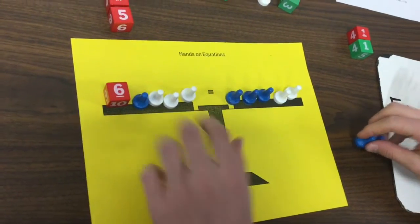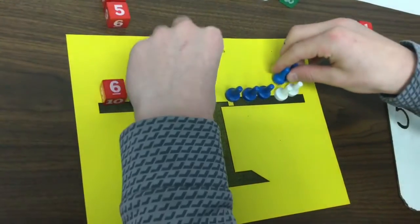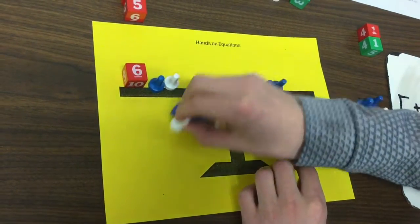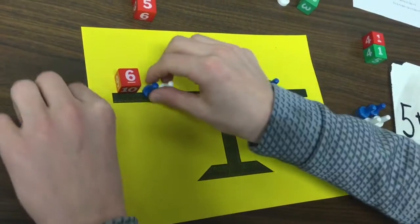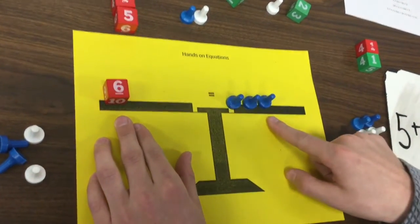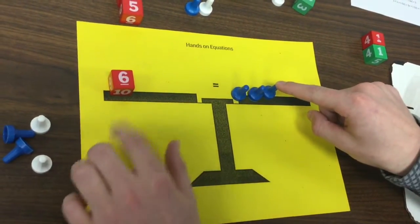We want to get rid of these, so we're going to add 2 to each side, and then that's going to go away. These are going to go away. And this is also a pair of 0s, so that goes away too. So 6 divided by 3 is 2. So x equals 2.